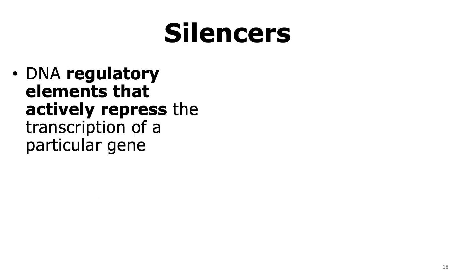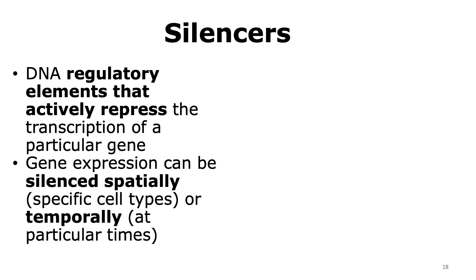We're now going to move on to another DNA regulatory element called silencers. These are DNA regulatory elements that will actively repress the transcription of a particular gene. Gene expression can be silenced spatially — in specific cell types — or it can be silenced temporally, meaning at particular times, for example during development.